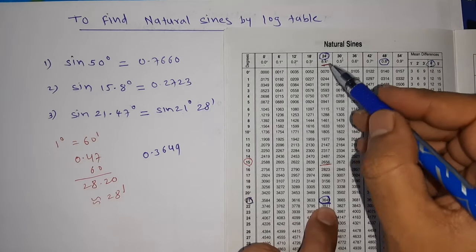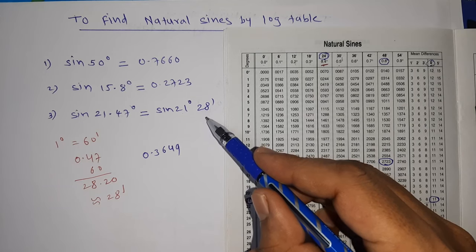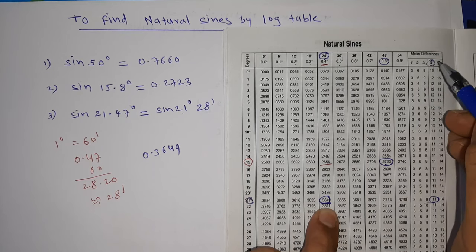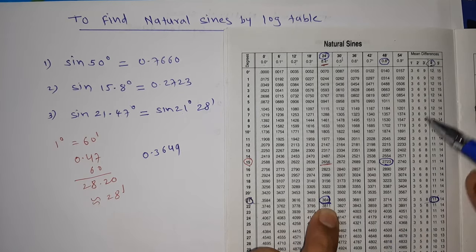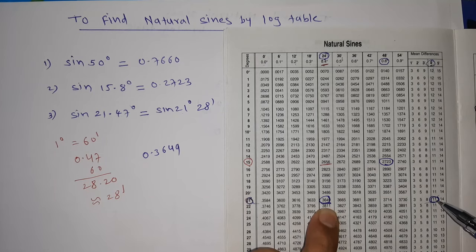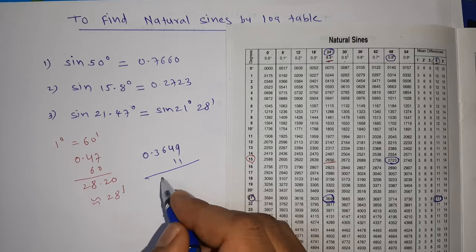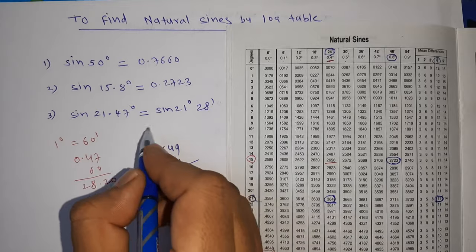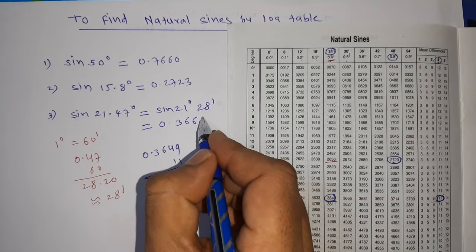We have 28, that means still 4 minutes are remaining. Those 4 minutes you will see in main difference. In 4 minutes that is 11. 21, and remaining 4 minutes will see here, I am getting here 11. So total is 0.3660. So the answer of this part is 0.3660.